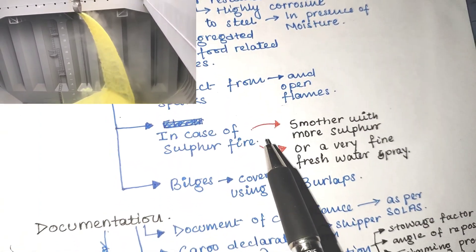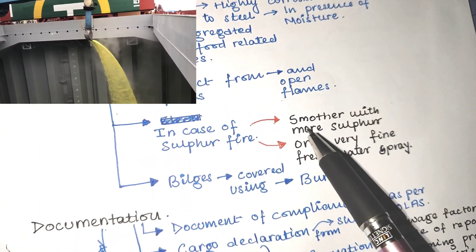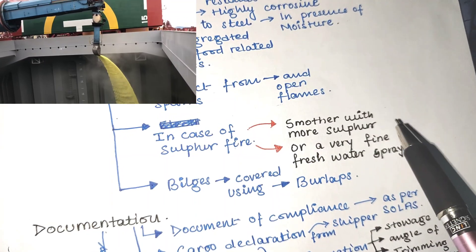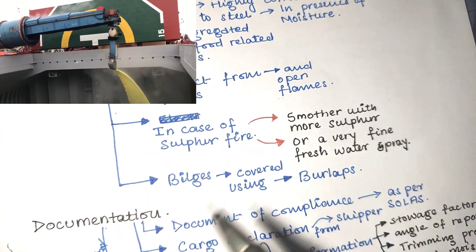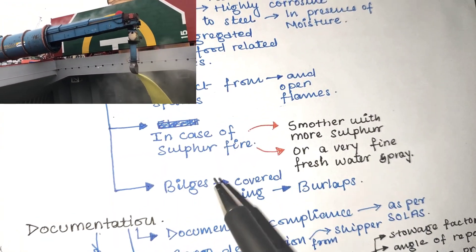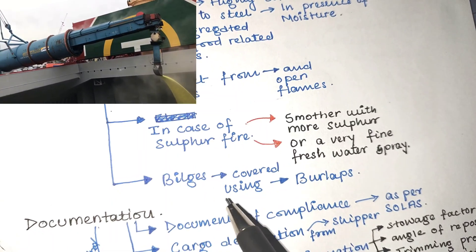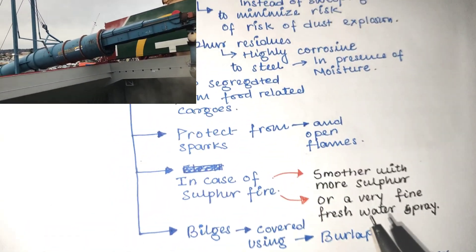In case of sulfur fire, smother with more sulfur or use a very fine fresh water spray. The bilges of the cargo hold should be covered using burlaps.